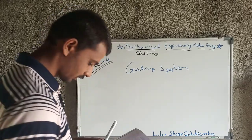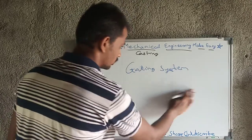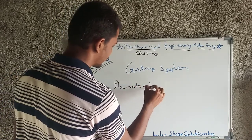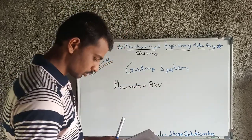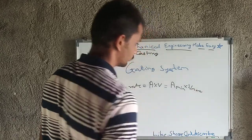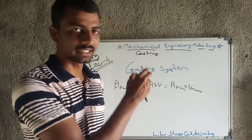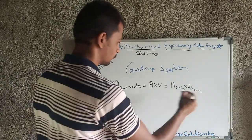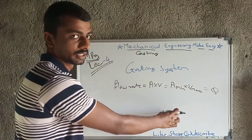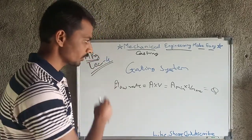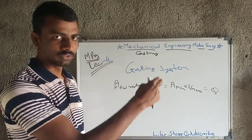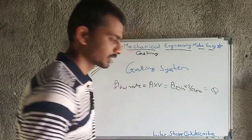Next is flow rate. Flow rate equals area multiplied by velocity. We take minimum area into maximum velocity because flow rate Q is constant — as area decreases, velocity increases inversely. So Q is constant from pouring basin to the ingate, and as area varies, velocity varies inversely. That's why we take minimum area times maximum velocity.